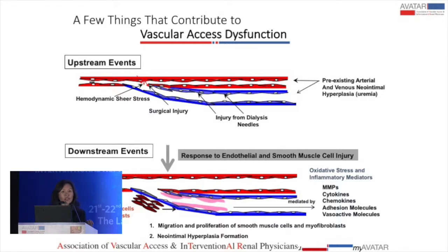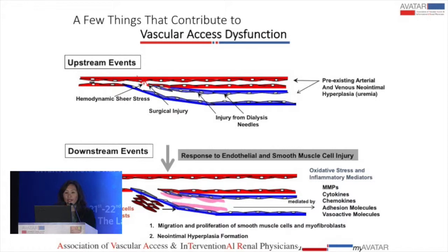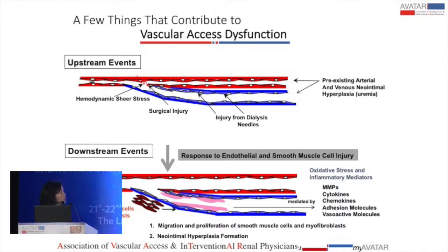Upstream events are events that initiate vessel injury. Unfortunately, a lot of vessels already have pre-existing arterial and venous neointimal hyperplasia due to the urinary environment and other issues, even before the access is created. So we already have a pre-existing poor vessel in many cases, and then we deliberately cause vessel damage. We ask our surgeons to cut the artery and vein to create this anastomosis, and then once the anastomosis is made, we induce hemodynamic stress that Dr. Galliani talked about, which promotes more dysfunction.